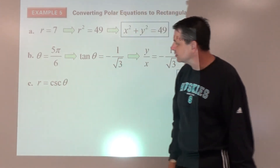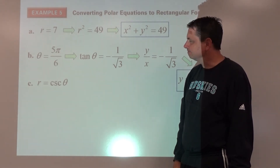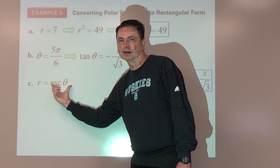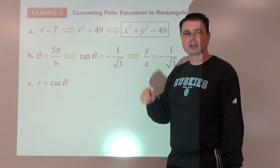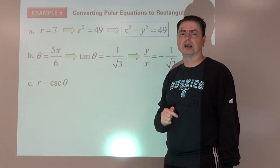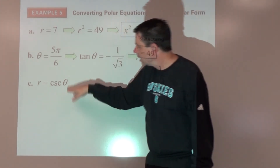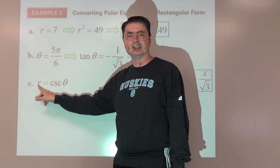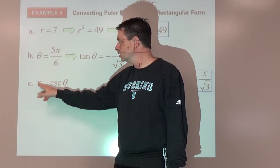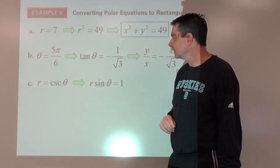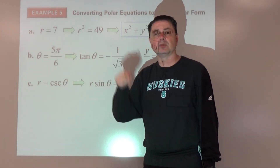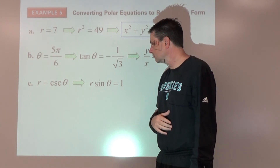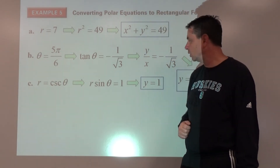Part c: r equals cosecant theta. We know conversions involve r sine theta and r cosine theta. Since cosecant is the reciprocal of sine, multiply both sides by sine theta: r sine theta equals 1, because sine theta times cosecant theta equals 1. And r sine theta is just y. So the rectangular equation is y equals 1, which is a horizontal line.